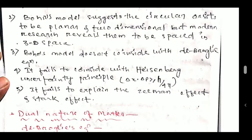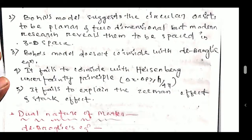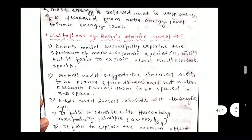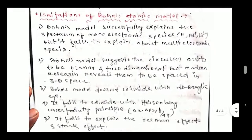The last limitation: Bohr's model fails to explain the Zeeman effect and the Stark effect. The Zeeman effect is when an external magnetic field is applied to a spectrum, causing it to separate into several components. In the Stark effect, an external electric field is applied to the spectrum and it also separates into several components. The key difference: Zeeman effect requires an external magnetic field, while the Stark effect requires an external electric field. These are the limitations of Bohr's atomic model.